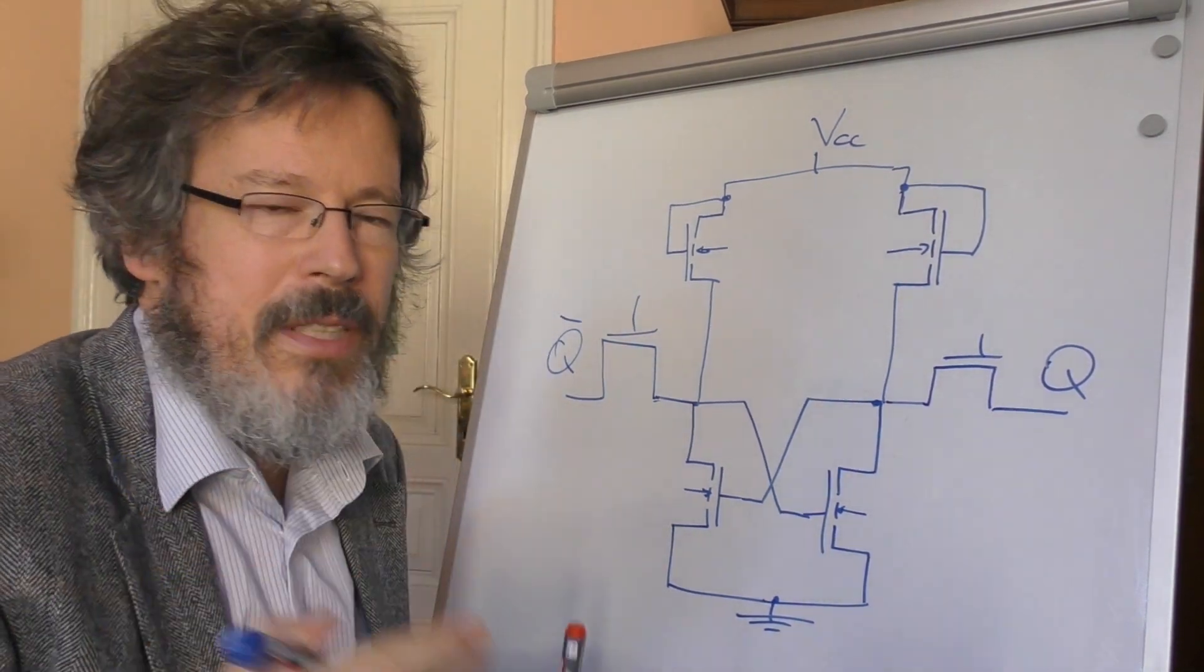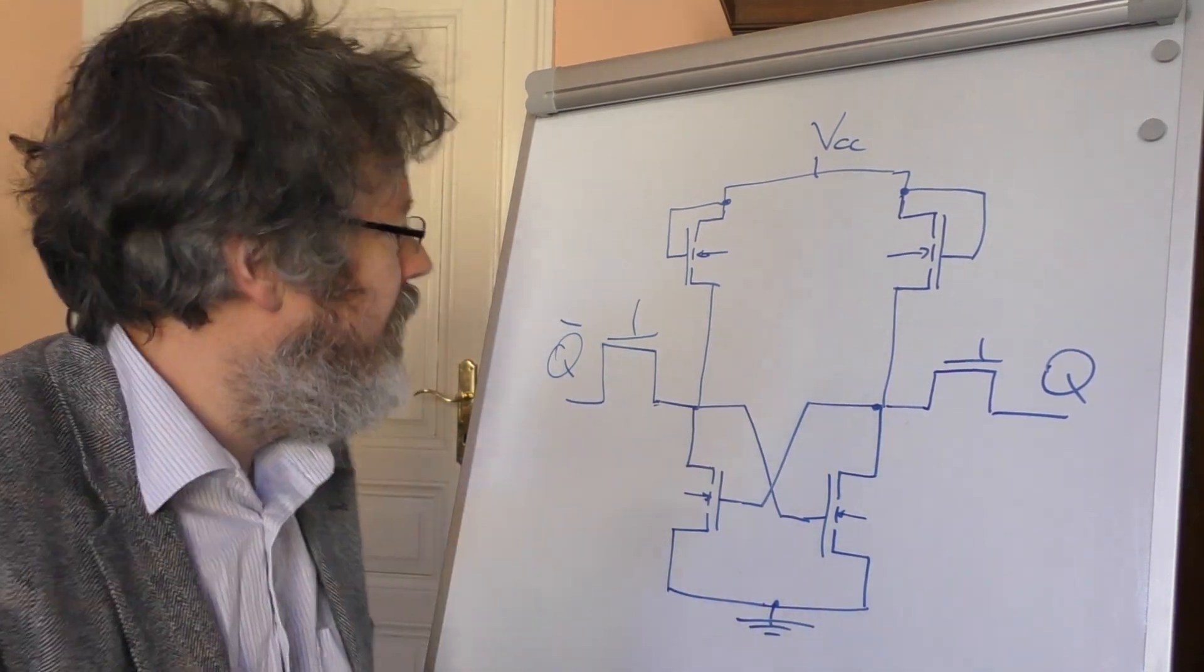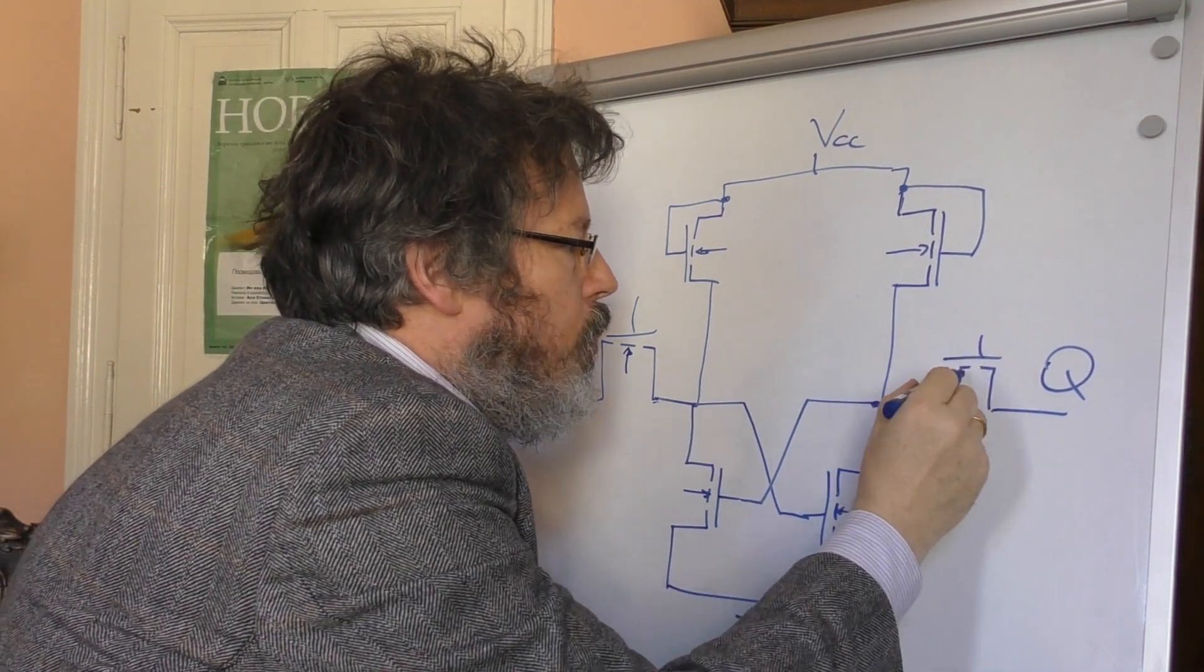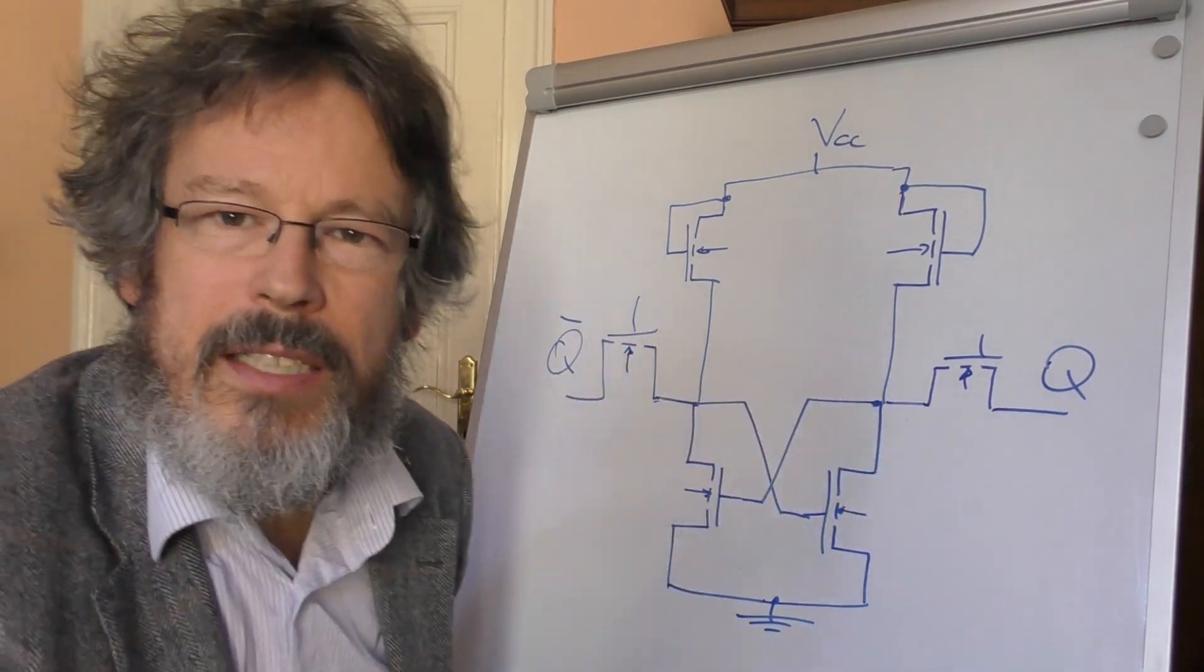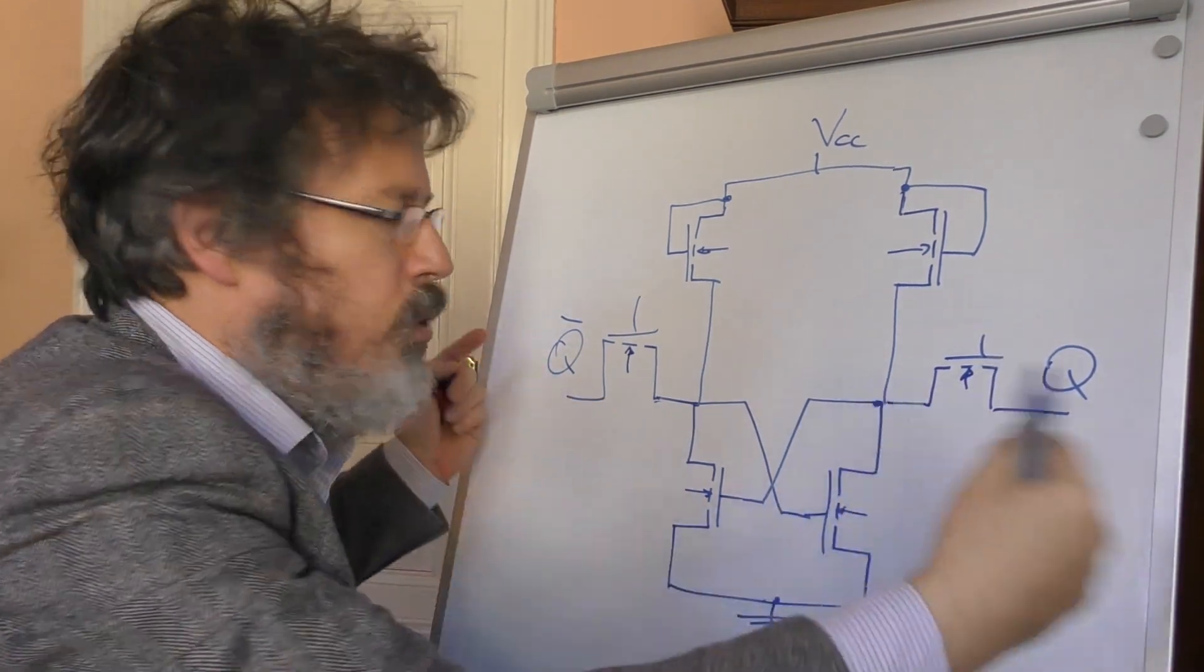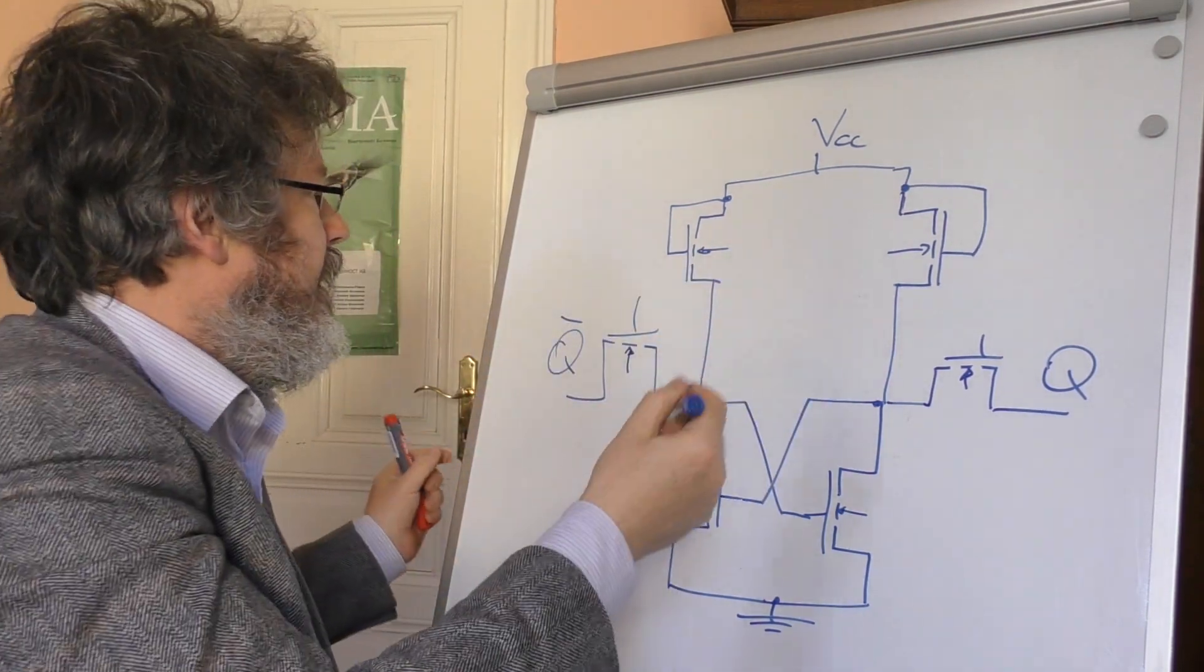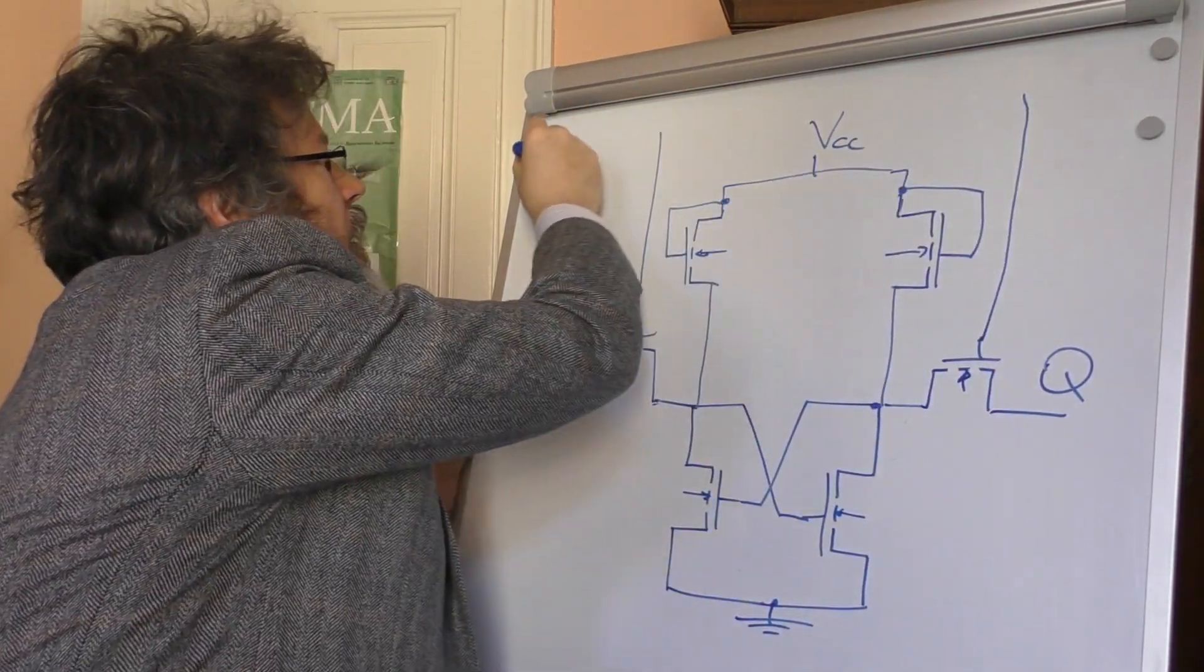What we haven't drawn yet are the word line and bit line—the question of how do I activate the cell as a whole and where do I read something out? The word lines—these are of course also NMOS transistors—and word lines are there to activate these NMOS gate transistors at all. That means when such a word line is set to 1, I get access to this switching cell via these transistors at all. When the word line is set to 0, it's isolated and simply keeps the state it's supposed to store. I'll draw this up here—this is the so-called word line.